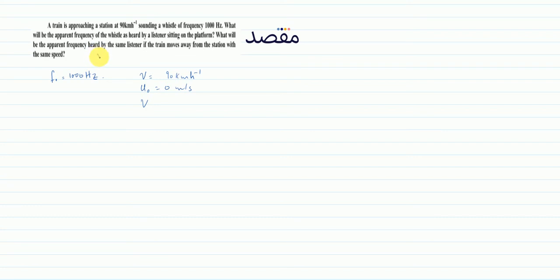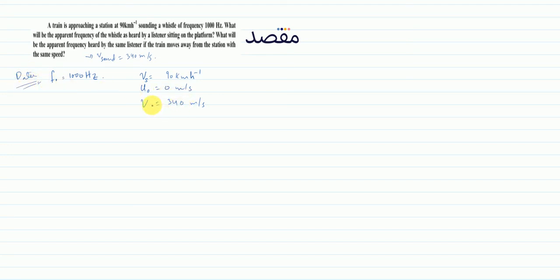In the question, the speed of sound is given as 340 meters per second. Guys, here we have two different units: 340 meters per second and 90 kilometers per hour. So what you'll actually do is convert the speed of the source — I'll write it as vs — into meters per second, because you cannot add or subtract quantities with different units.